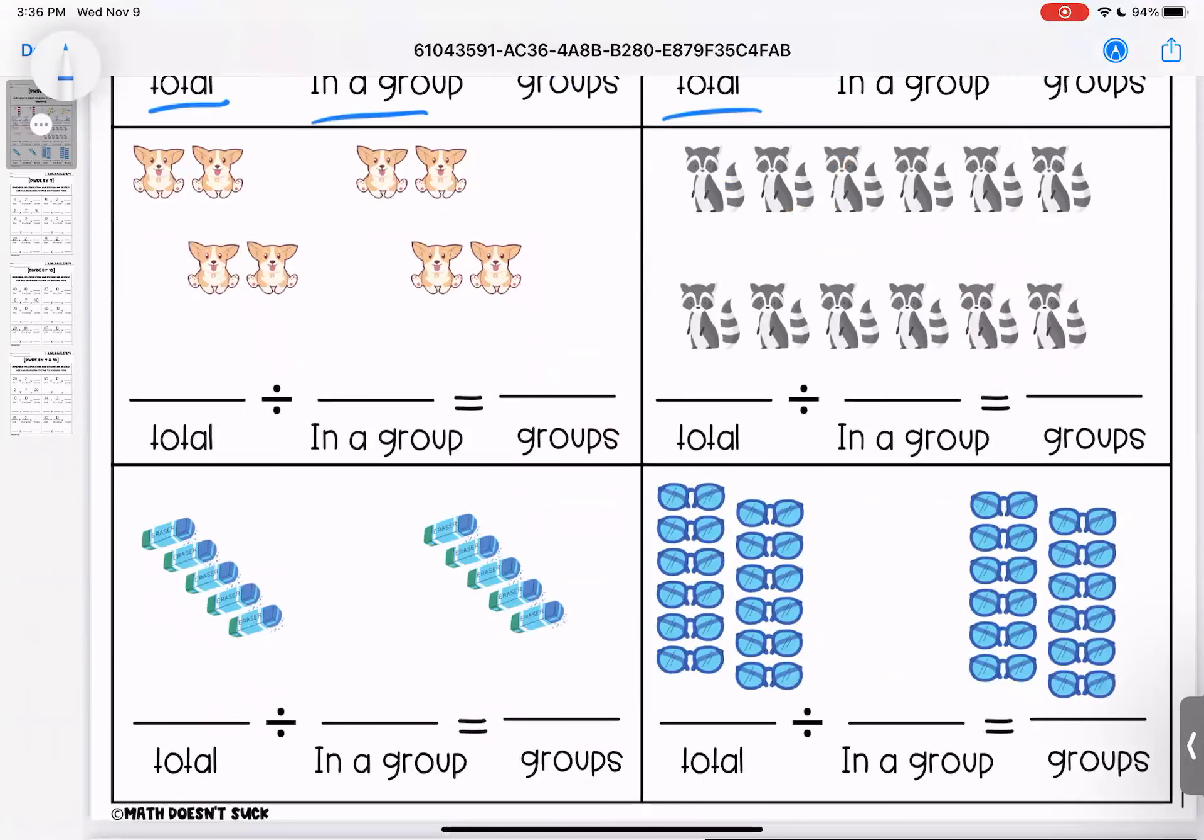All right, this time we have two, four, six, eight. Eight divided by two is four. Eight divided by two is four. This time we have six here and six here. So we have twelve divided into two. Each group has six.